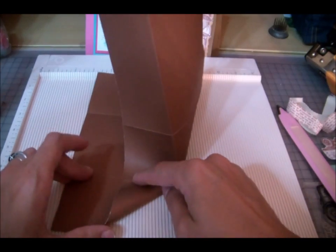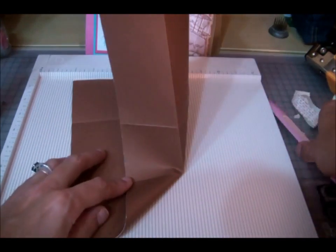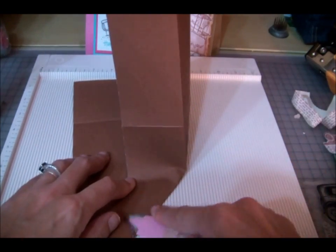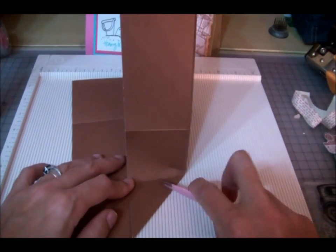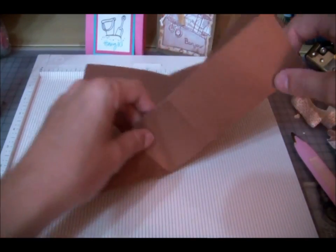So just taking that little crease and lining it up with the crease right below it, and then we're going to score that as well. Get a nice sharp edge right there. We're going to do that to all four sides.